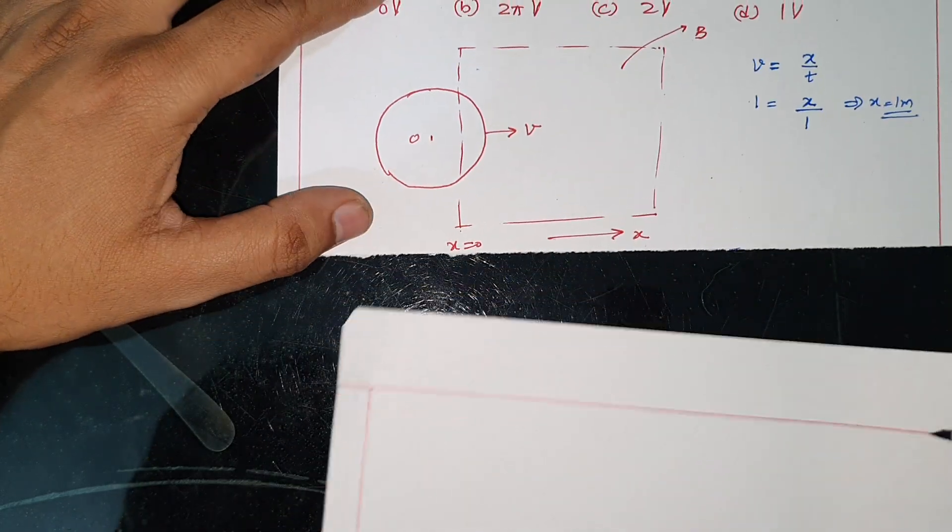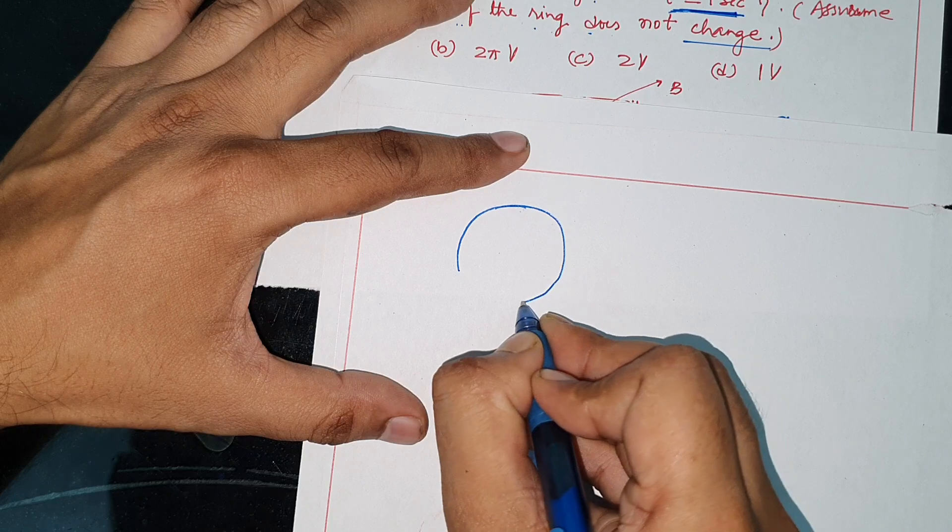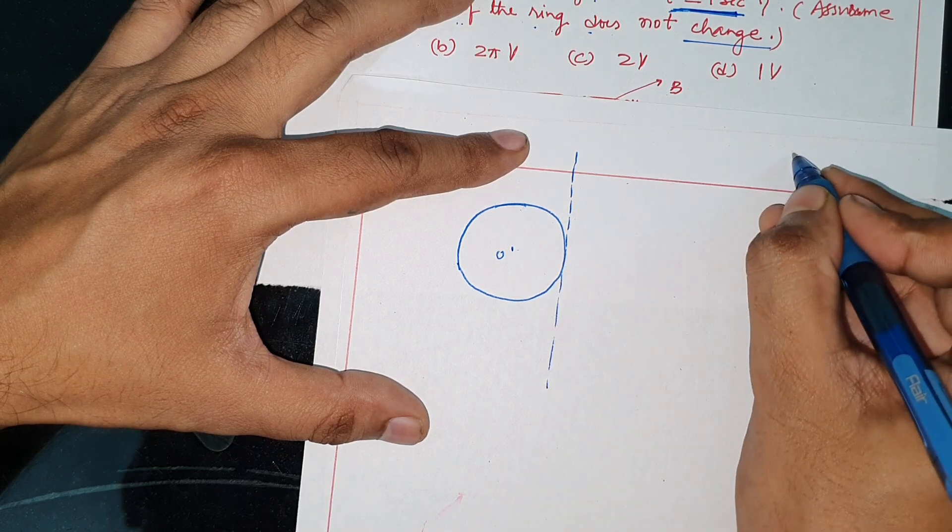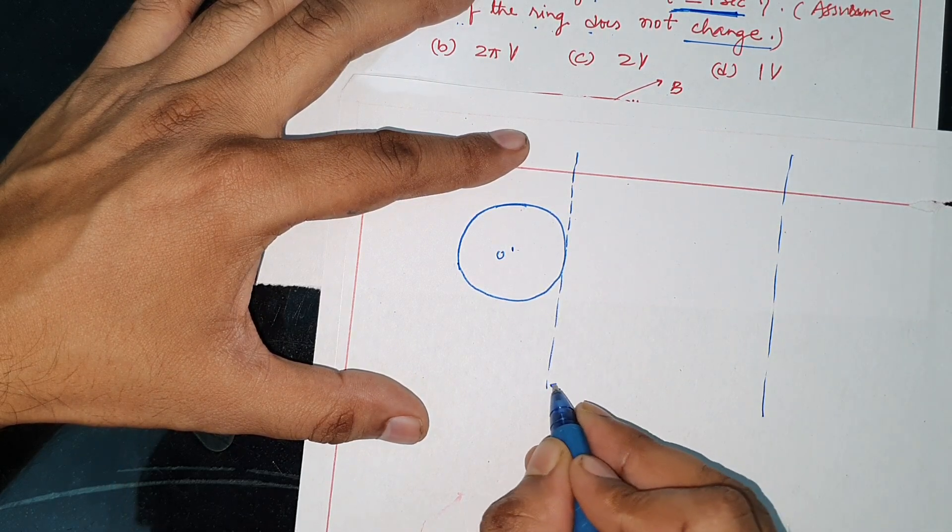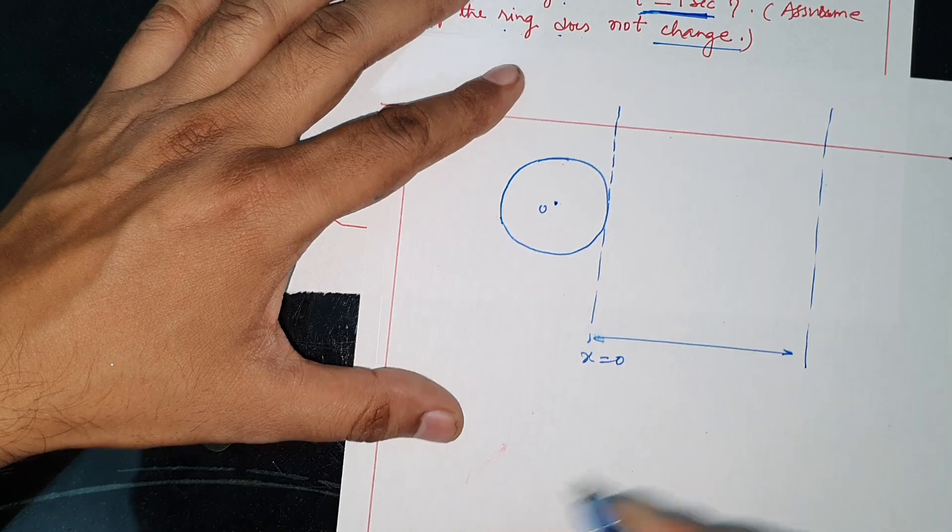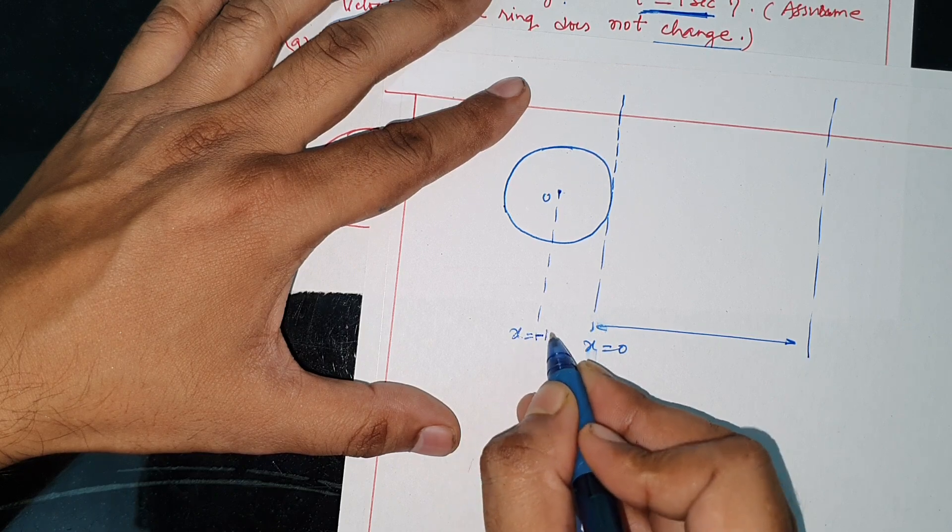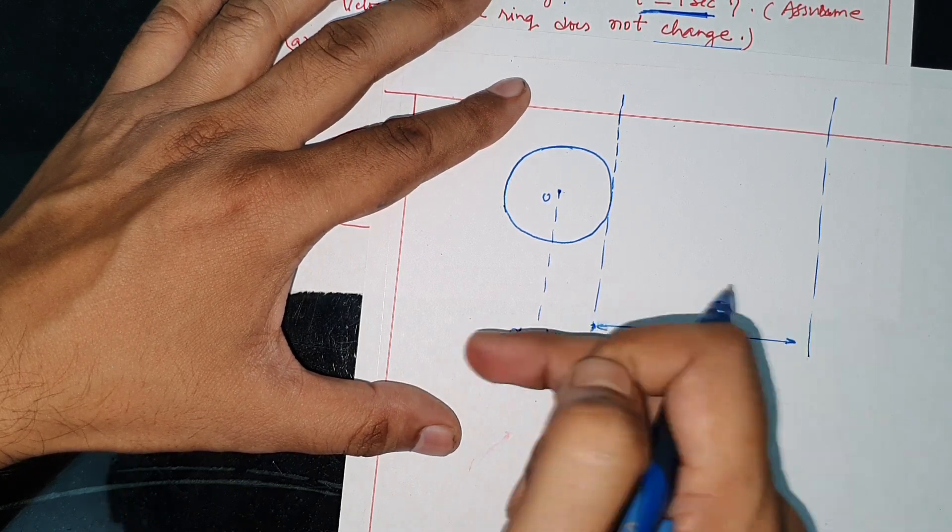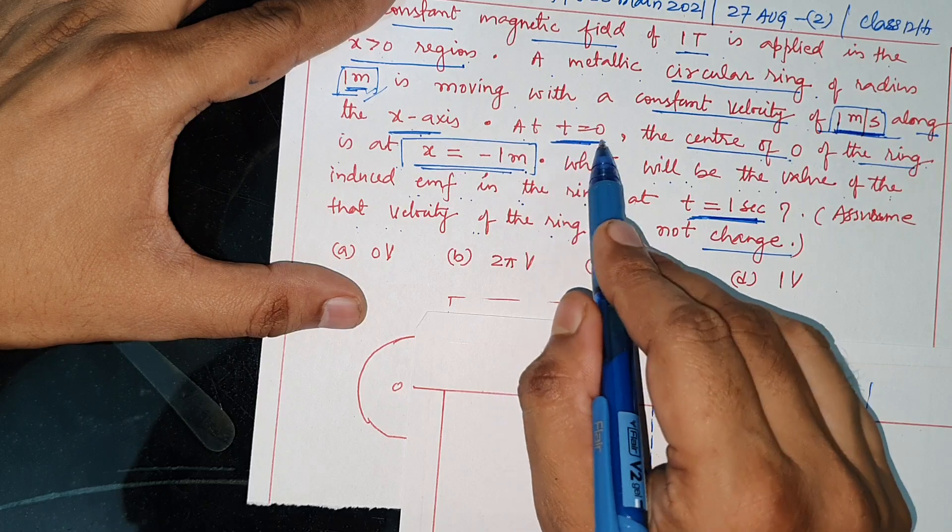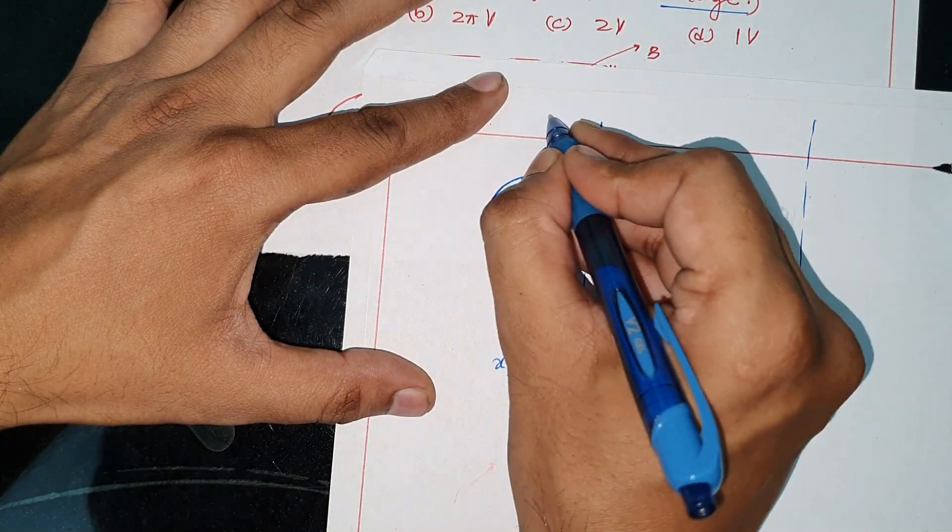In the beginning, remember that initially this circular ring will be something like this. That means that this distance is 1 meter. At t = 0, the center of the ring is at x = -1 meter. This is t = 0 situation.